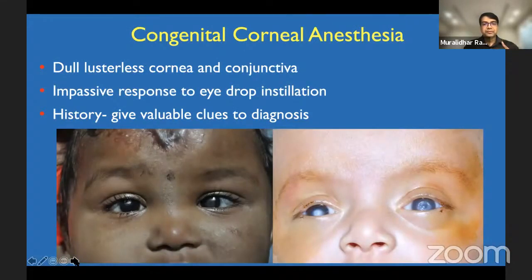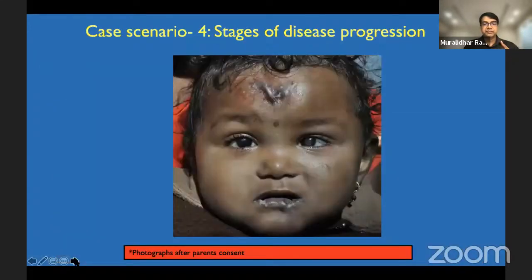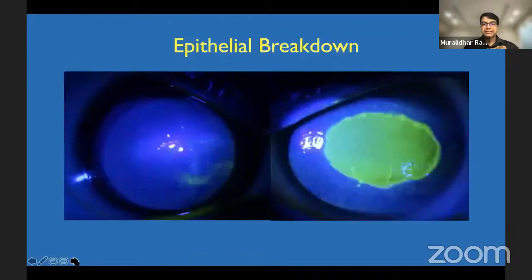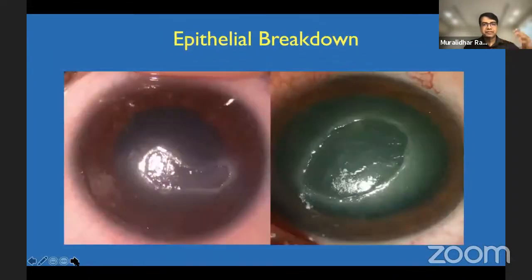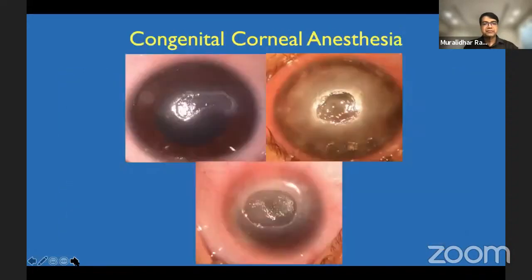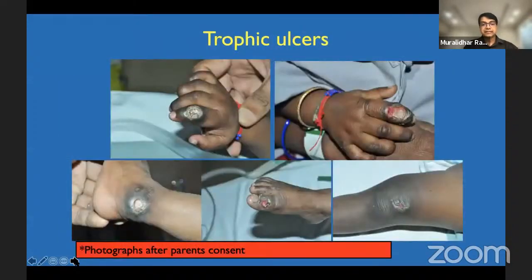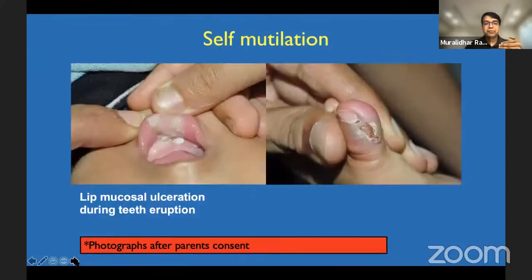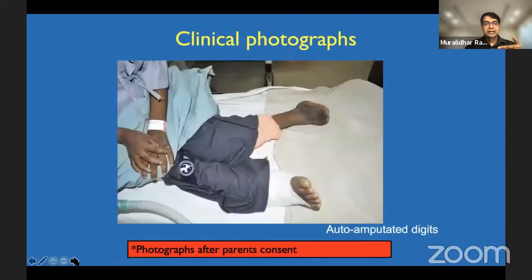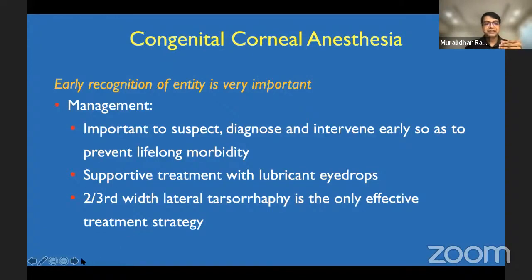We talked about neurotrophic conditions. This is one case of congenital corneal anesthesia wherein you can actually see a lustreless cornea, no tears whatsoever, and epithelial breakdown — this is going a very relentless course. Epithelial breakdown is one of the key steps, leading to relentless progressive stromal melting and keratolysis. As Dr. Sangeeta was speaking about, these cases have a self-mutilating condition if you examine carefully. It is very important to do neuroimaging to pick up hereditary sensory and autonomic neuropathy. The only available treatment is a two-thirds width lateral tarsorrhaphy. Even if the other eye doesn't show any frank ulcer, the moment you recognize congenital corneal anesthesia — they typically manifest between six to twelve months of life — it's very important to act.